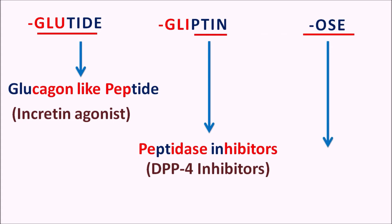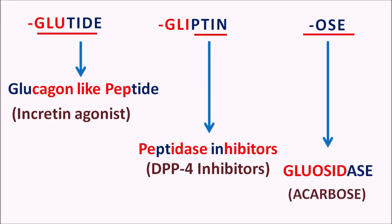The suffix OSE is derived from the enzyme glucosidase. These drugs inhibit alpha-glucosidase enzyme activity. For example, acarbose is an alpha-glucosidase inhibitor. If the suffix is ASE it denotes an enzyme, and when A is replaced with O it means the enzyme activity is being inhibited. So OSE indicates they are enzyme inhibitors. In this way, you can remember the suffixes and their categories easily.